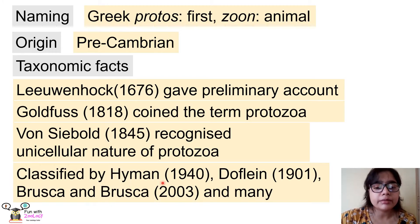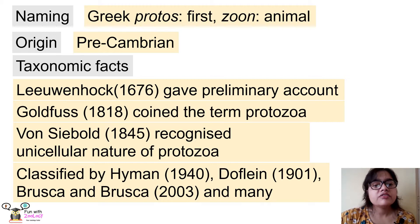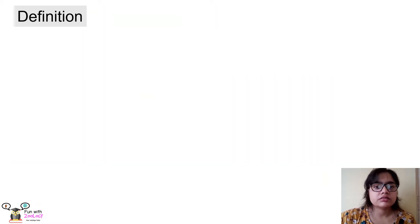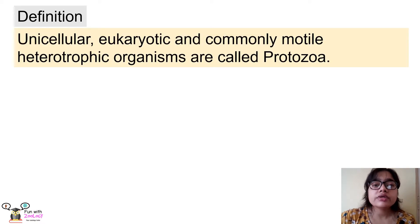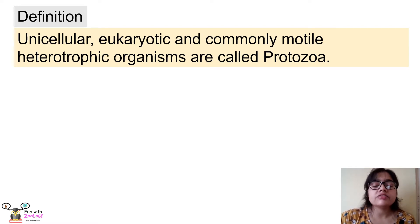Different scientists later classified protozoans — these different classifications were given by Hyman, Dofflein, Brusca and Brusca, and others. Now we must know the definition of protozoans. Before going into the definition, we must know some particular characters found only in protozoans. First, they are unicellular — 'uni' means one and 'cellular' is derived from the word 'cell' — so protozoans are made up of only one cell.